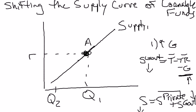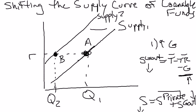The new interest rate–quantity combination is at point B. Point B is not on the initial supply curve, so there must be a new supply curve — Supply 2 — meaning an increase in government spending causes the supply curve of loanable funds to shift to the left. Anything that causes government savings to fall will shift the supply curve of loanable funds to the left.